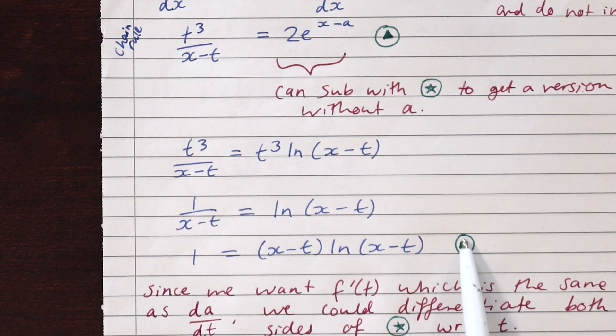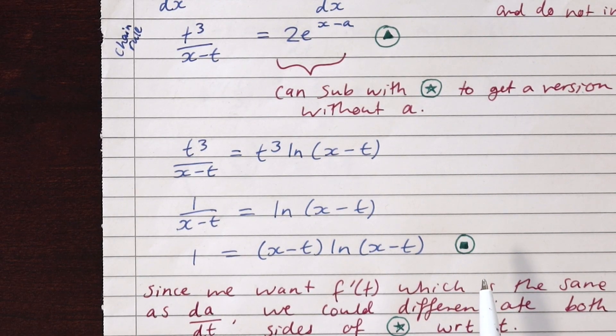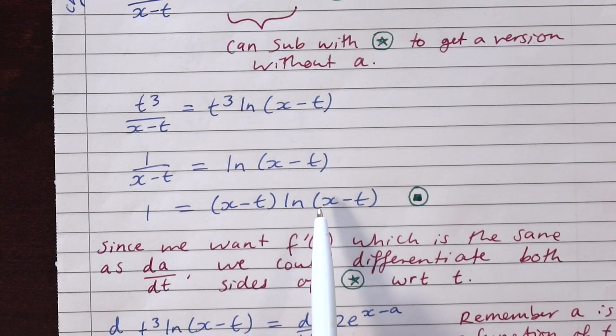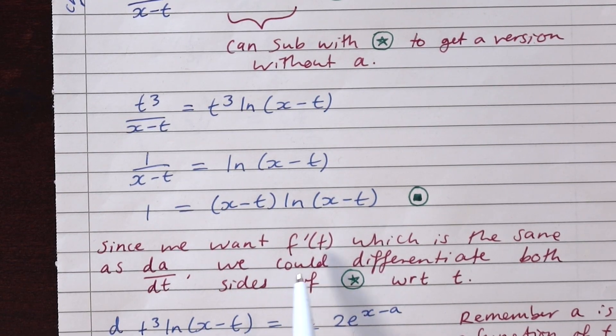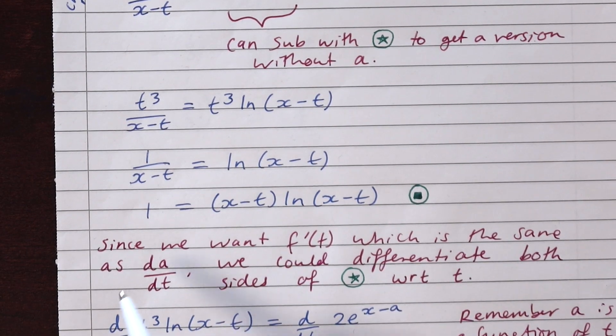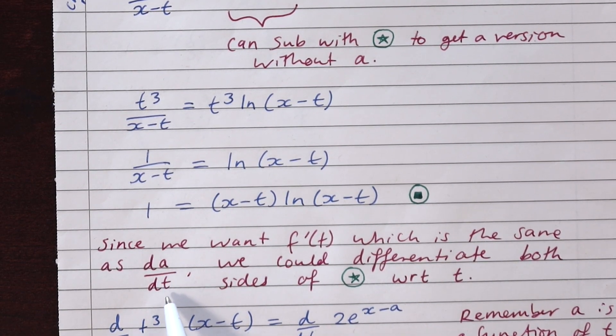And I'll call that square, because we're also going to use that later. This might seem like another dead end, but we have to remember that we're being asked to find f prime of t, which I prefer to think of as da/dt. And how would we get a da/dt? Well, we could go back up to an equation that we started with.